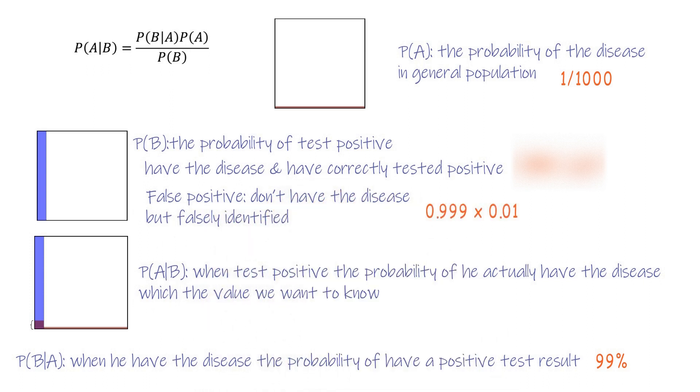Now, let's plug all these numbers to the formula. We get 9%. This is how we solve the false positive problem.